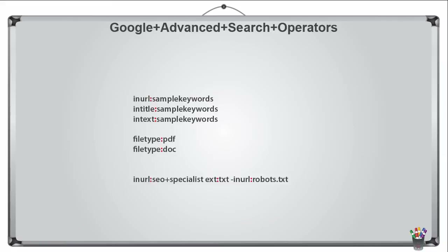What in the world are Google advanced search operators? You may have read about them online. There are great URLs on the internet which I'm going to show you to expand your understanding. If you are not familiar with them, it is simply running certain search terms in Google search to bring different result sets according to what advanced search operators you run.